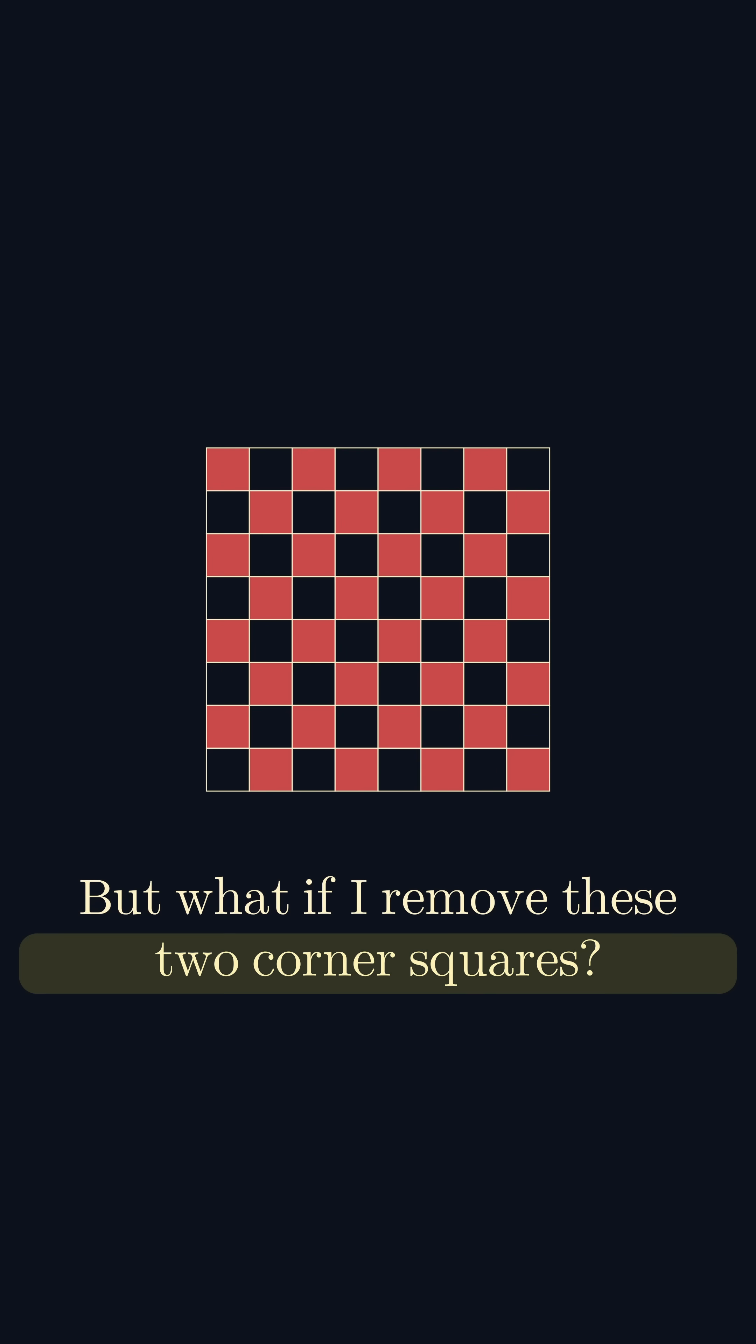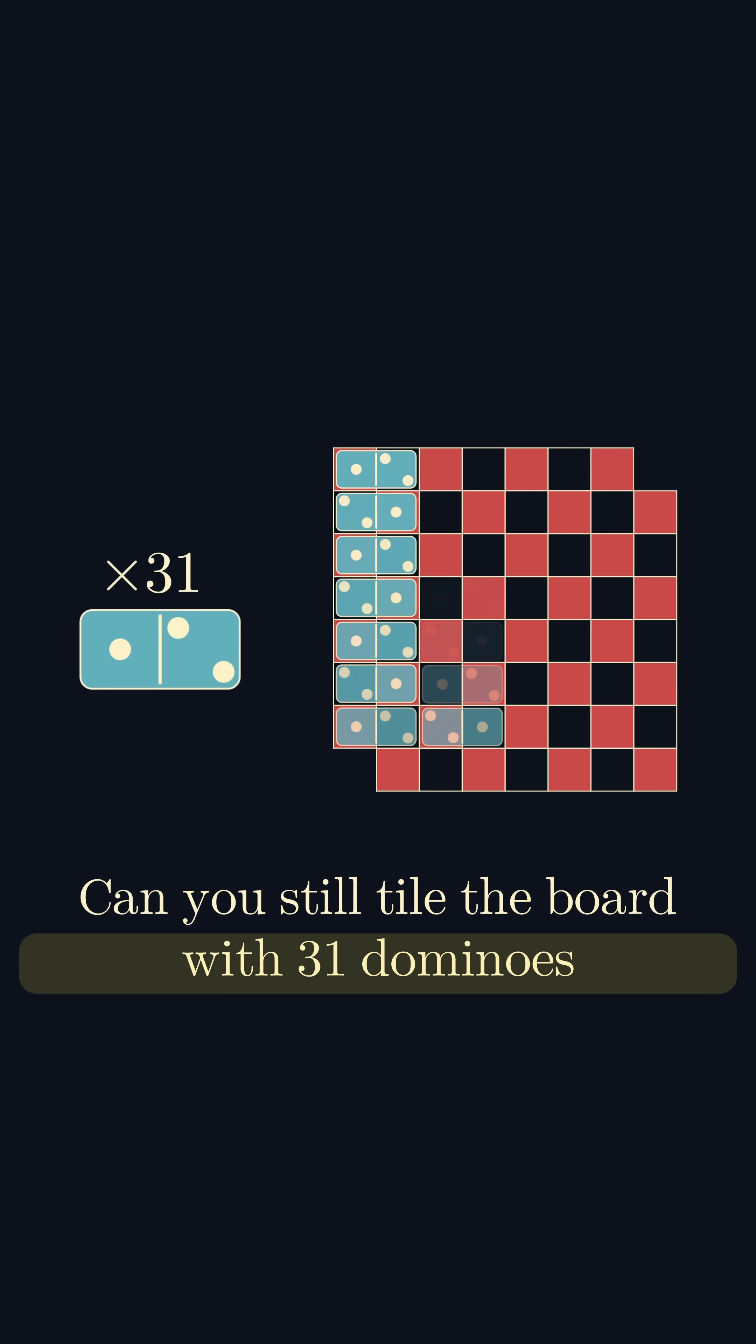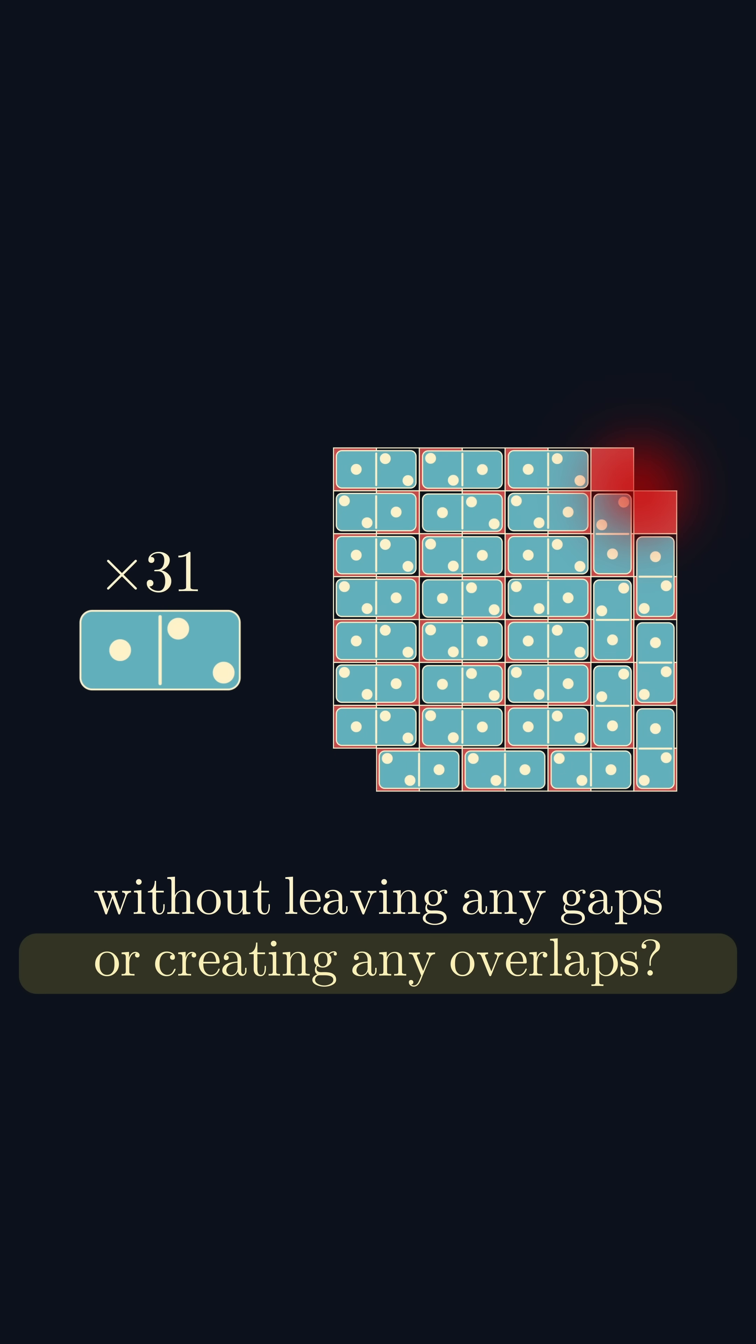But what if I remove these two corner squares? Can you still tile the board with 31 dominoes without leaving any gaps or creating any overlaps?